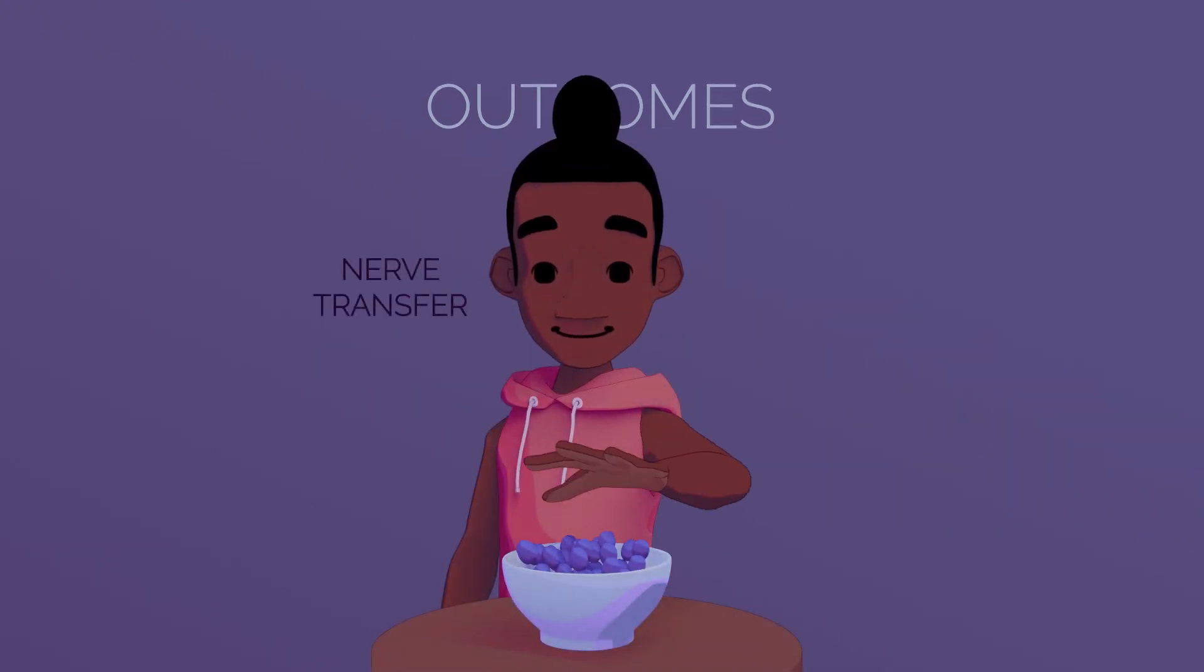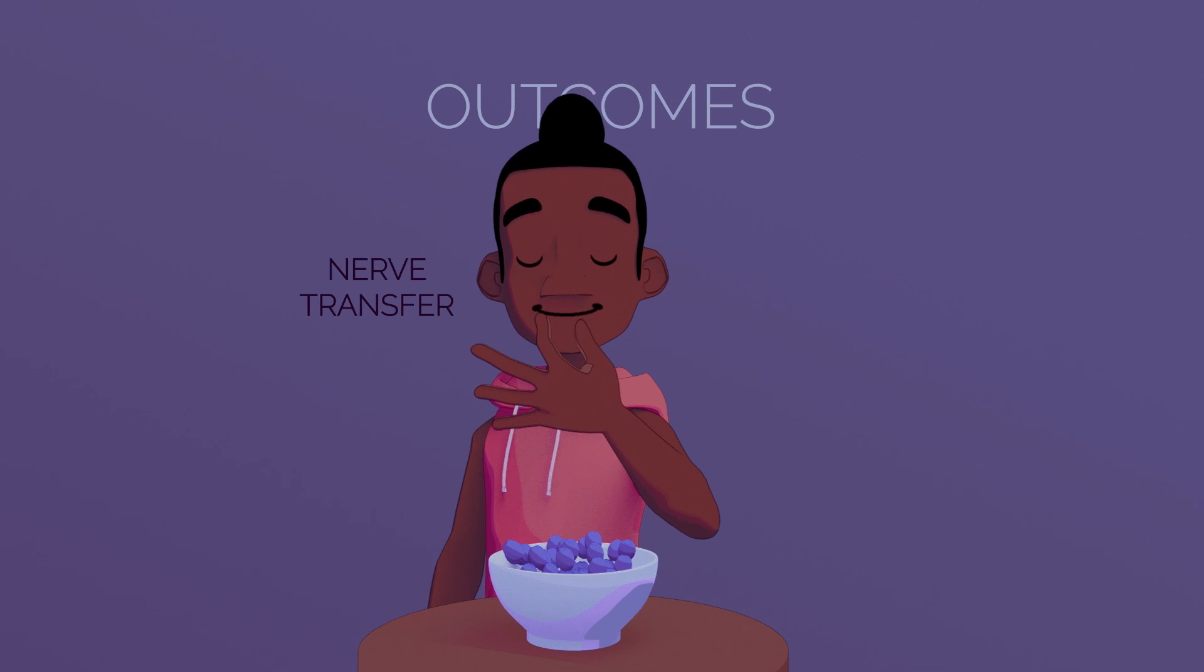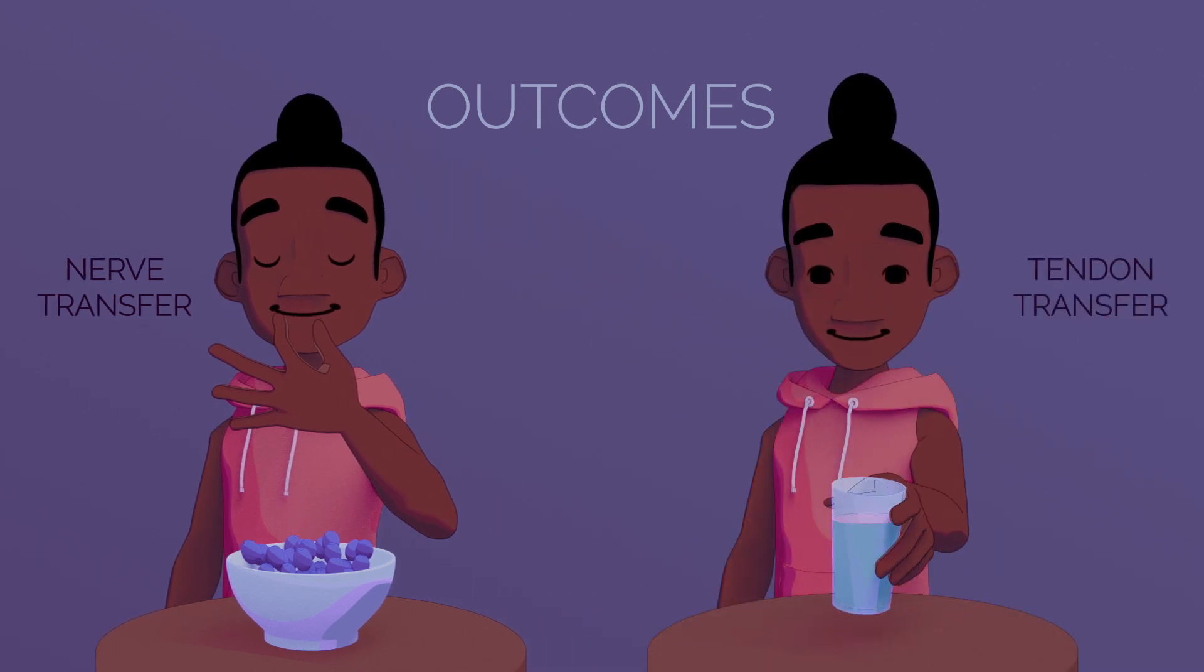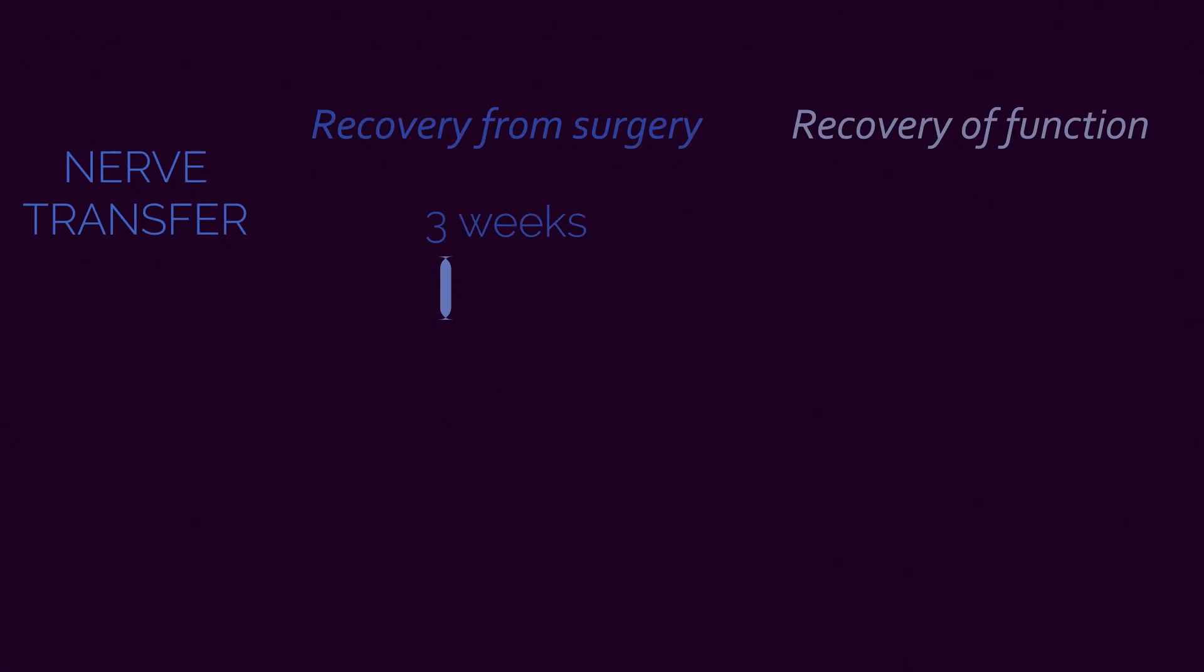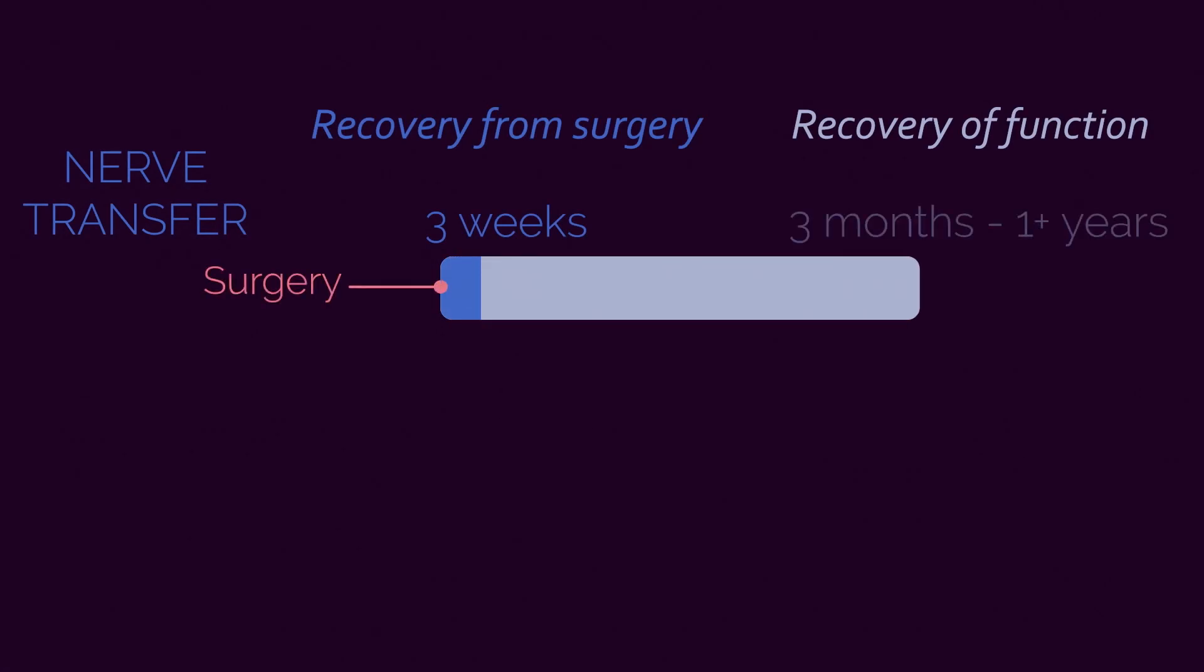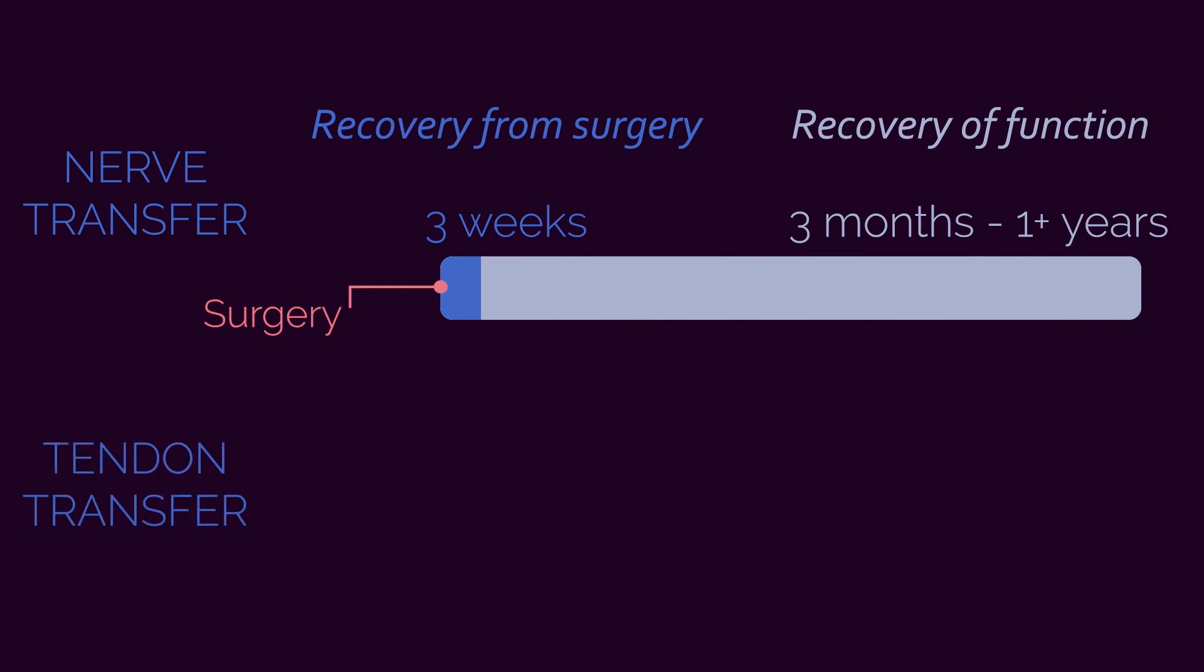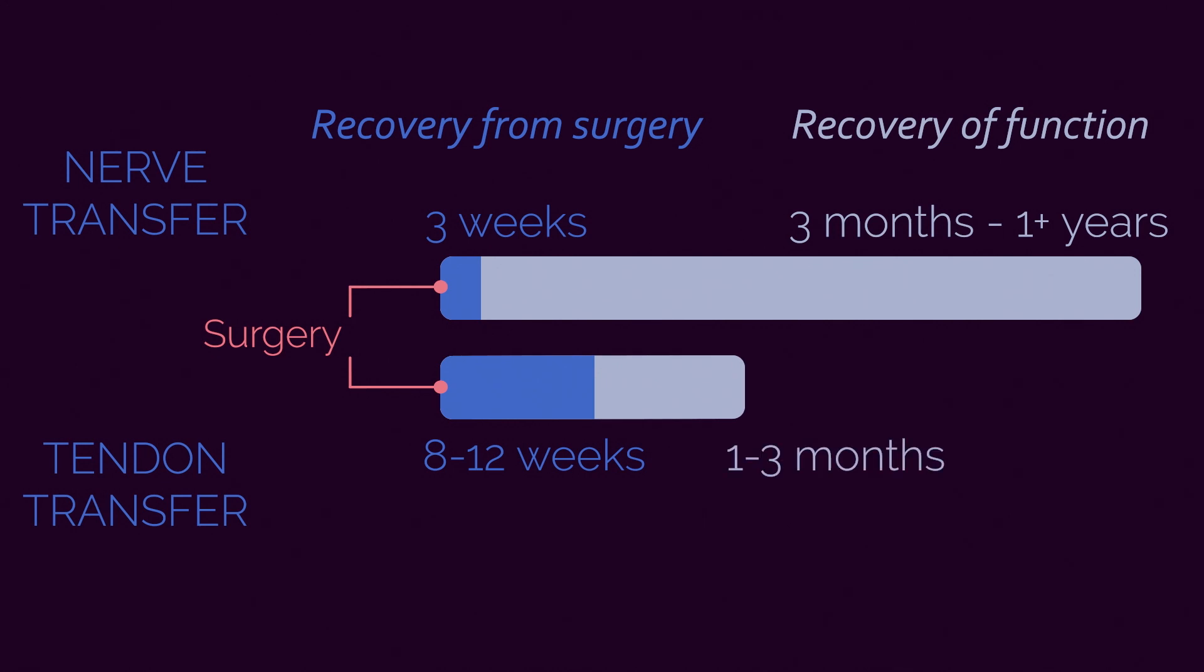A nerve transfer is better for fine movements, while tendon transfer tends to provide more strength. Nerve transfers take less time to heal, but it takes longer to see improved movement. Tendon transfers take longer to heal, but it takes less time to get the movement.